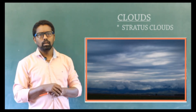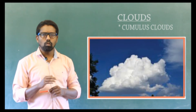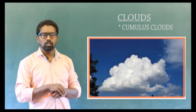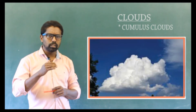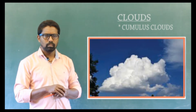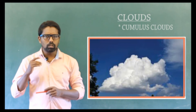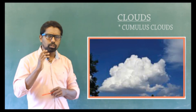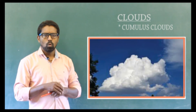Cumulus clouds: these clouds resemble huge cotton bundles and are formed due to strong convection currents. They have large vertical extent.